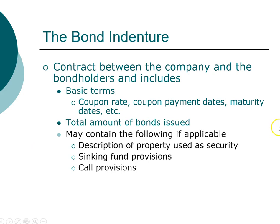As you look at these characteristics, the important question to ask is: is the characteristic advantageous to the bondholders or to the company? If the characteristic is advantageous to the bondholder, then the company will be able to pay a lower coupon rate. If the characteristic is advantageous to the company, then it will have to pay a higher coupon rate to attract investors.